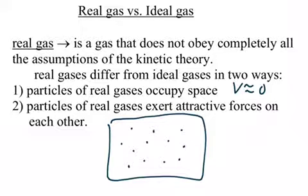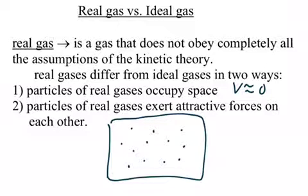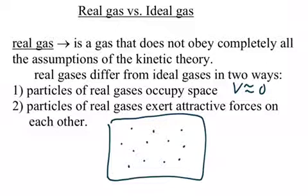So an ideal gas is a gas that has no volume, but a real gas does. A real gas has volume, but it's so little — so negligible — that we're going to say that gases don't have volume. That's our first assumption.